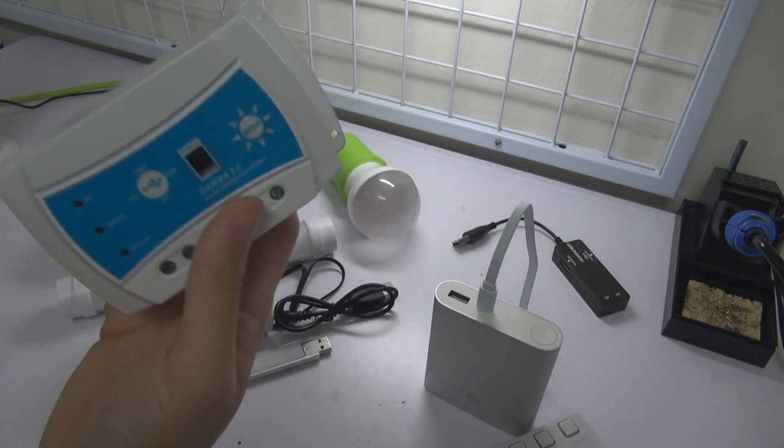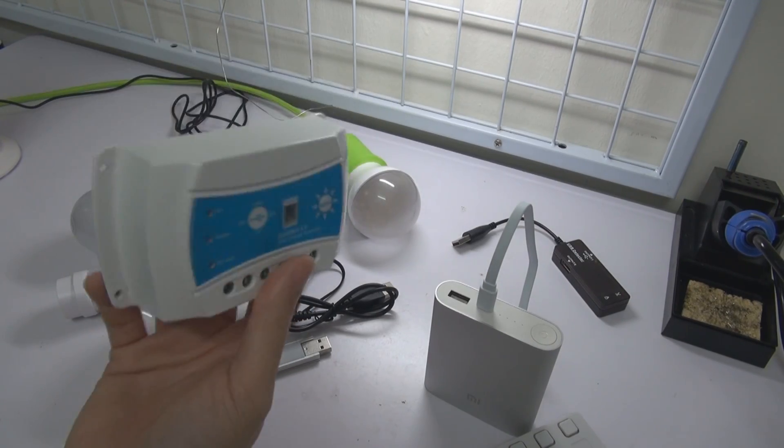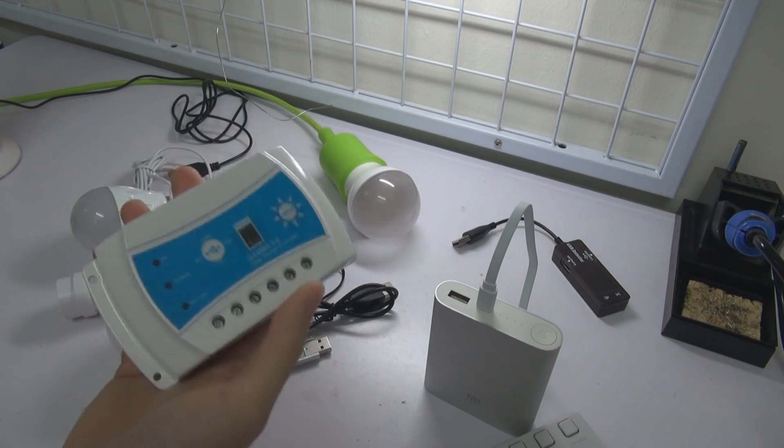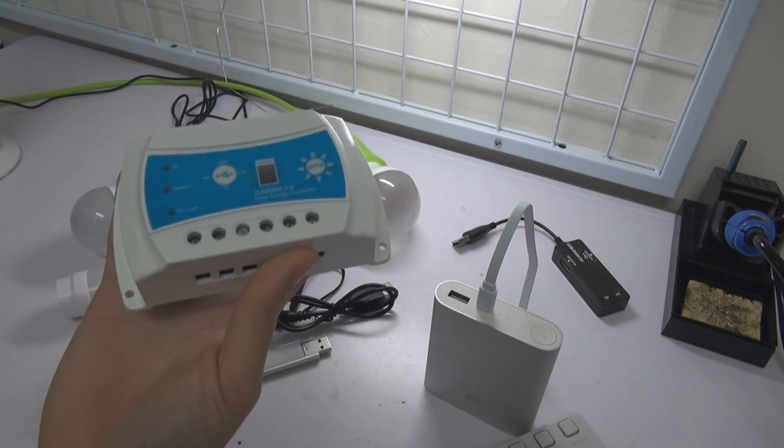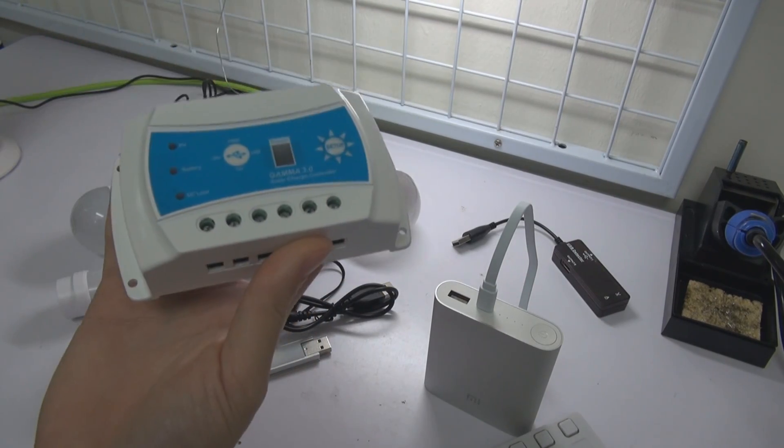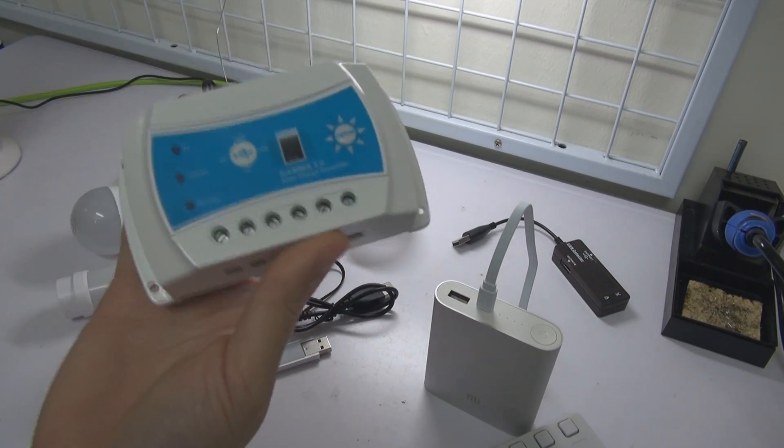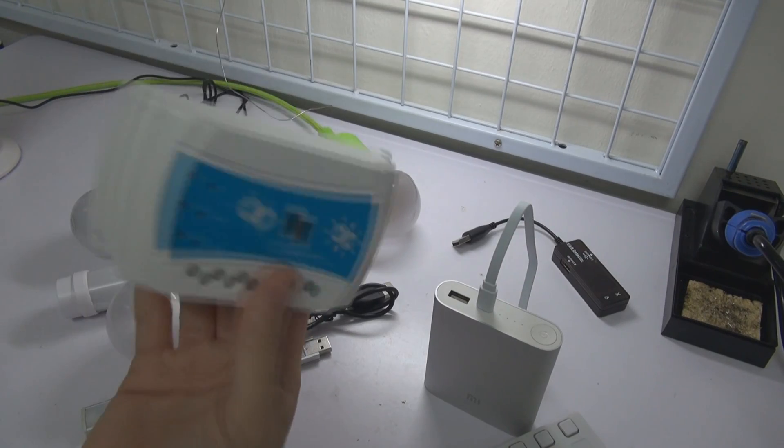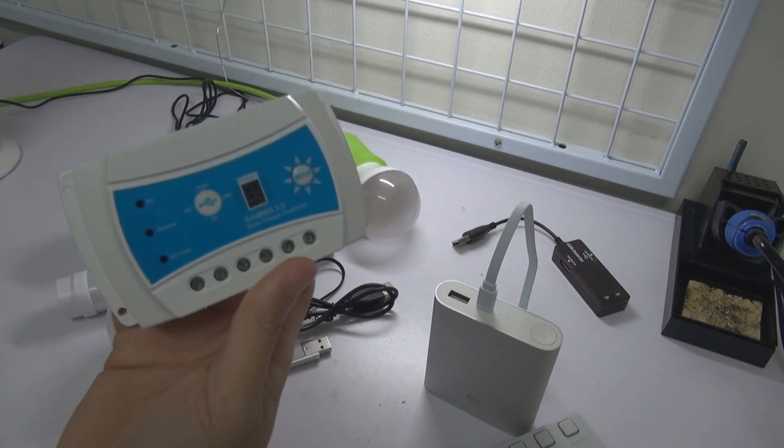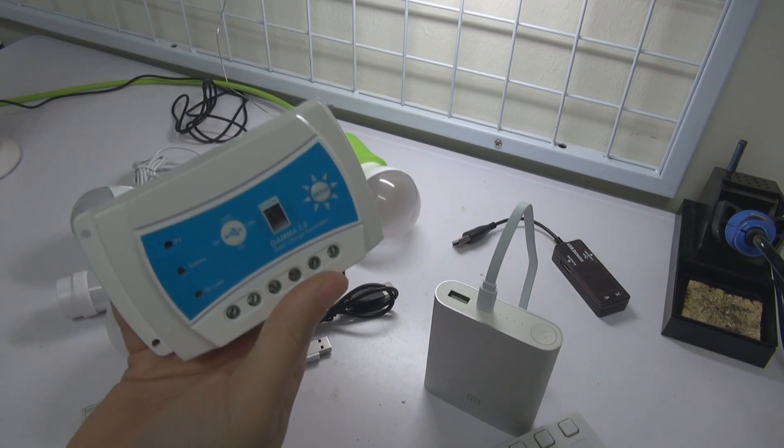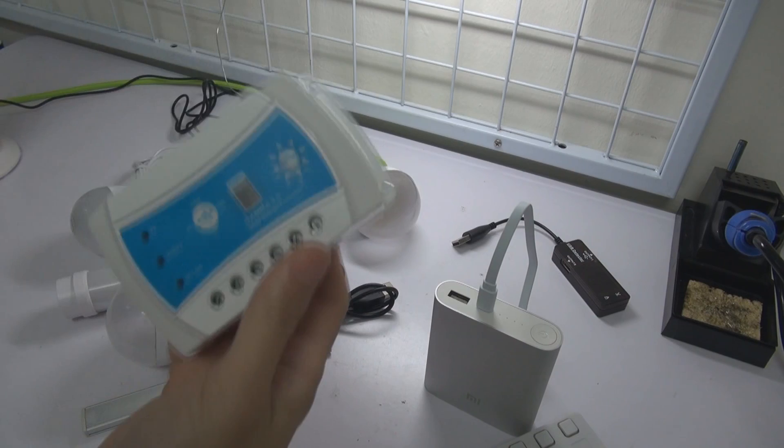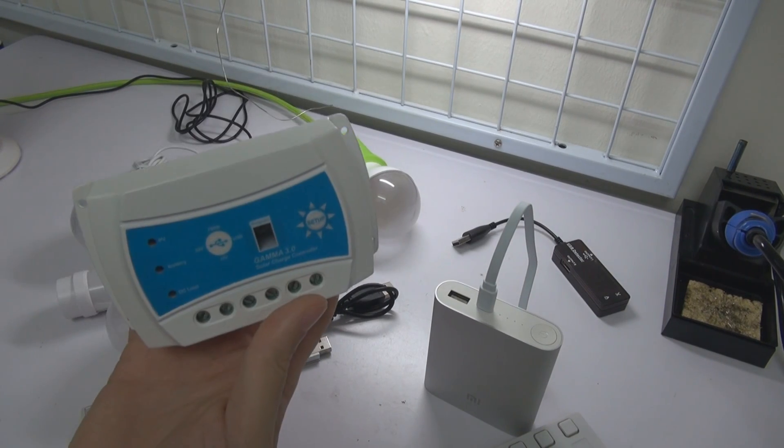We believe in the Gamma 3.0, the third thing about this controller is, compared to the Gamma 2.0, it's half of the price, half of the price, but reliability, quality, maintain the same. So once you go to a website and you check out the price, you will be very, very happy. So it's very affordable, it comes with extensive warranty, the build quality and the performance is all there, even the price is dropped to the half.